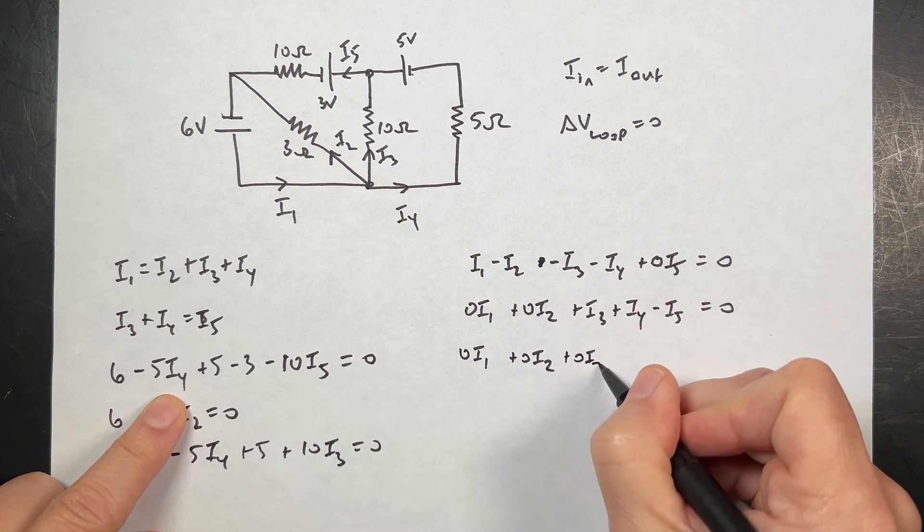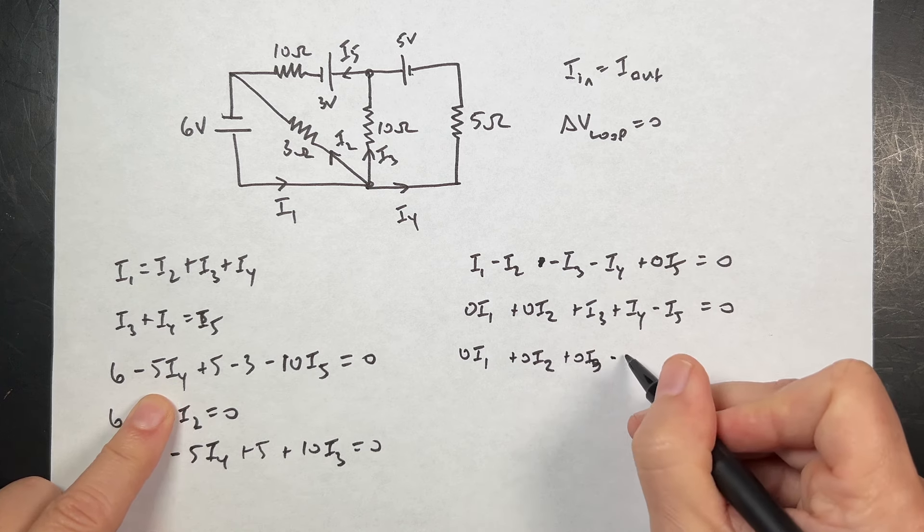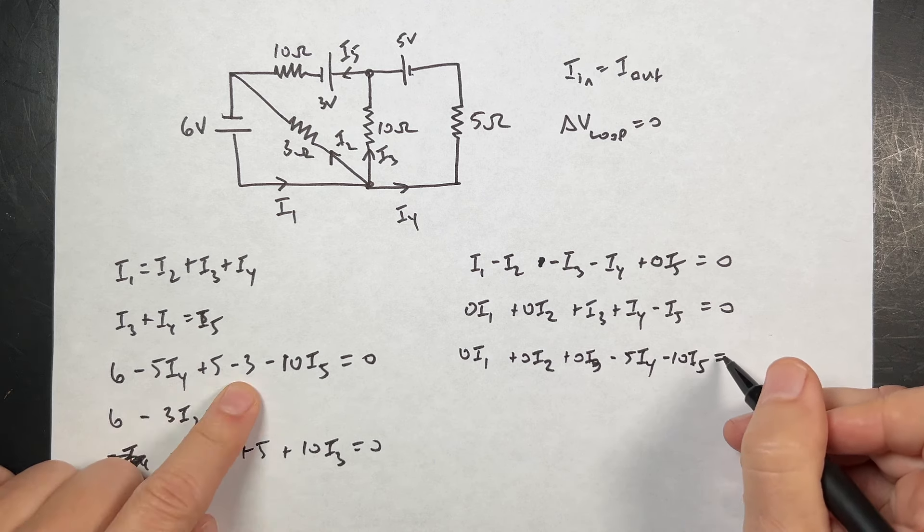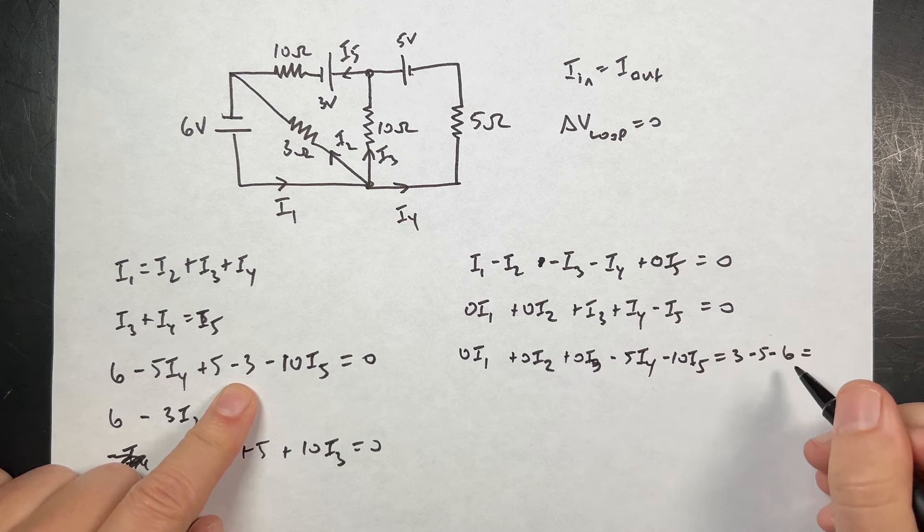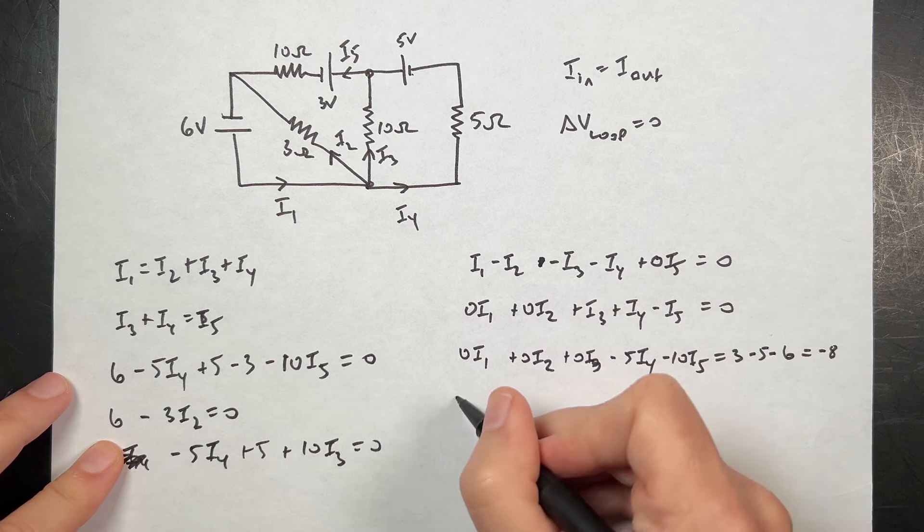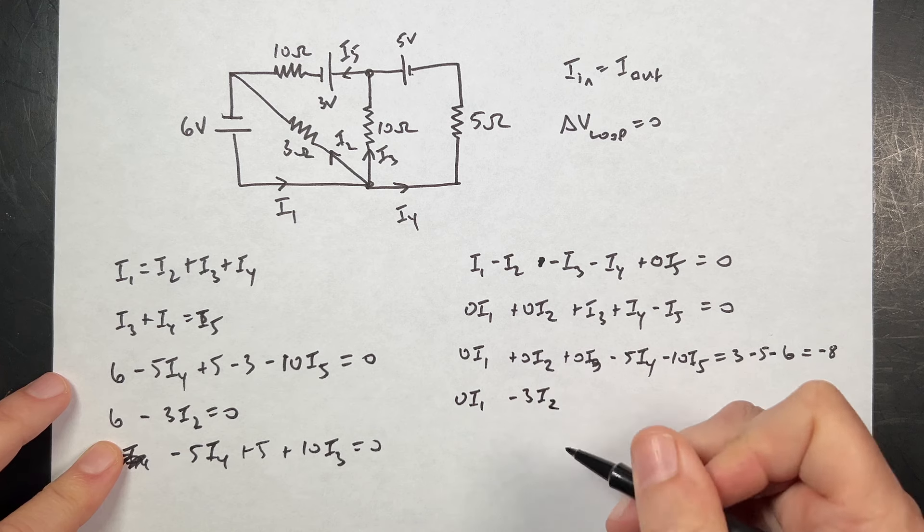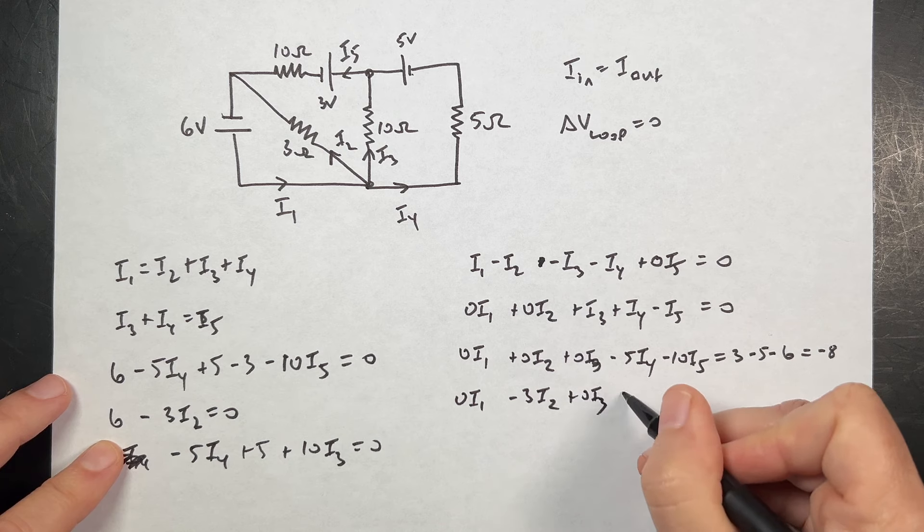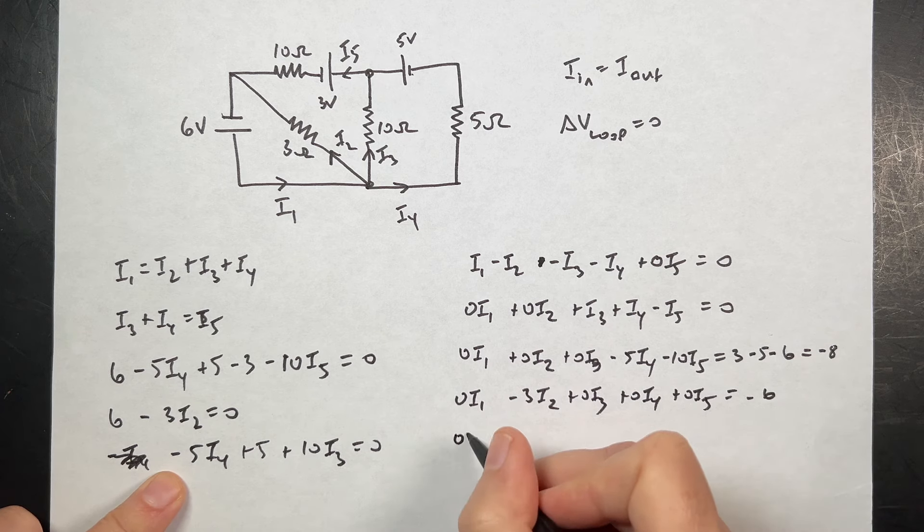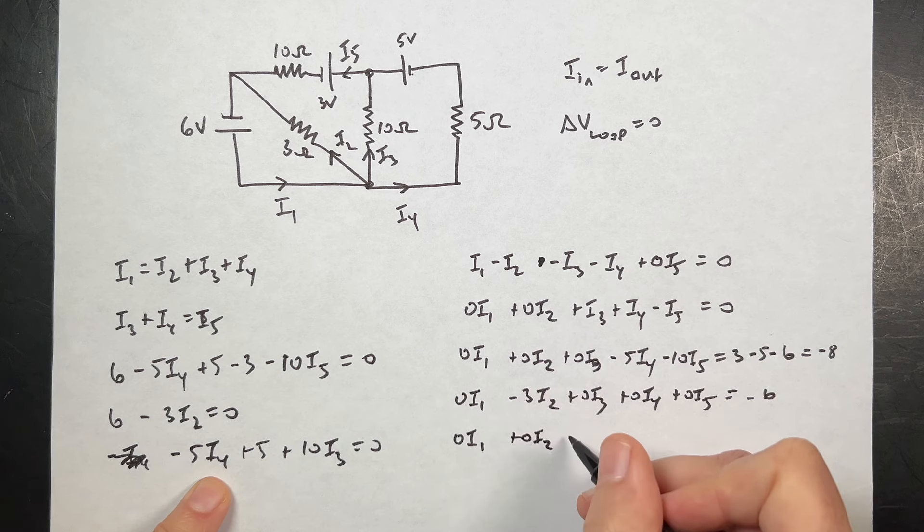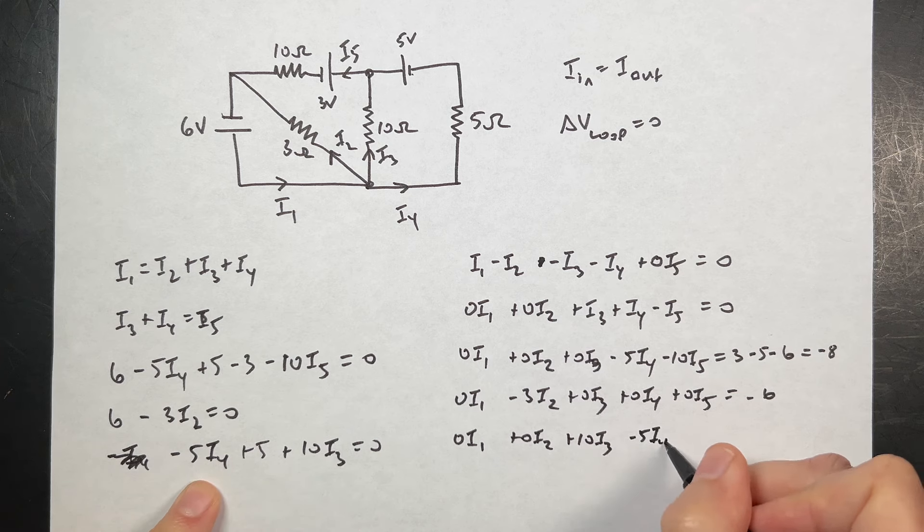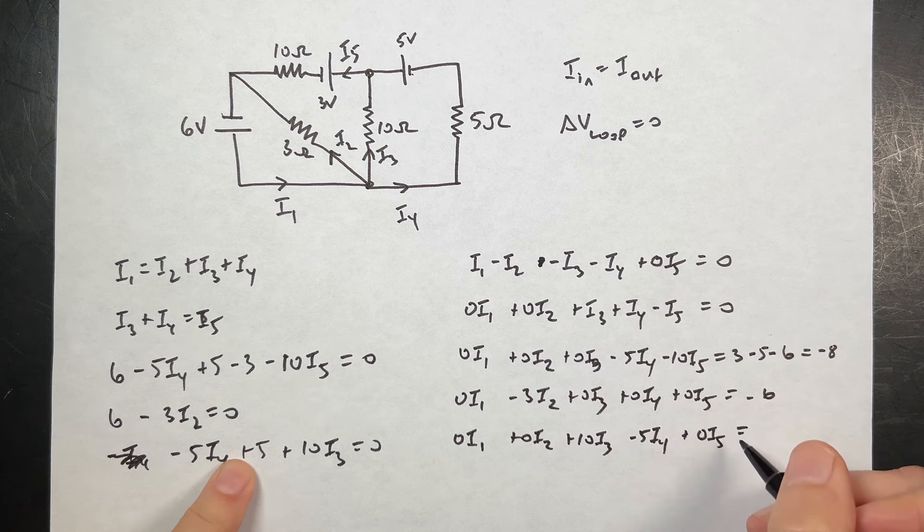This one I'm going to say is equal to zero I1 plus zero I2. I want to include I1, I2, I3, I4, I5 in every single equation, even if it's a zero. And I want to have the right side of the equation constant. That's what I'm doing here. Zero, and then I have plus zero I3. This is minus 5 I4 minus 10 I5 equals, and then on the other side I have three minus five minus six equals. That's going to be negative eight.